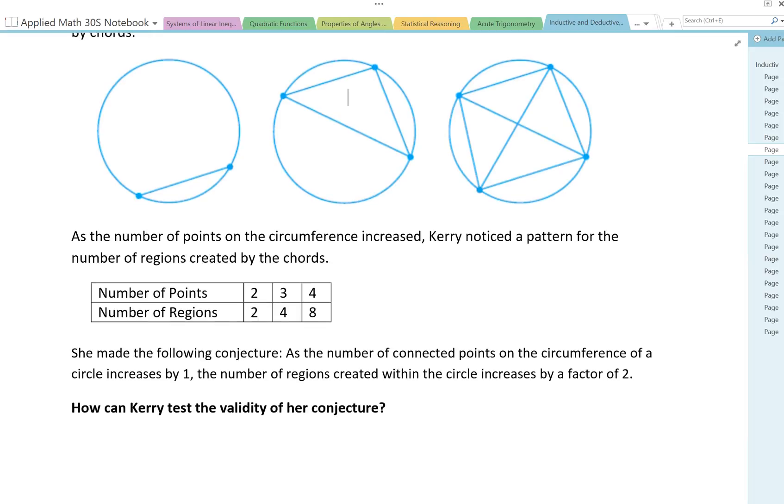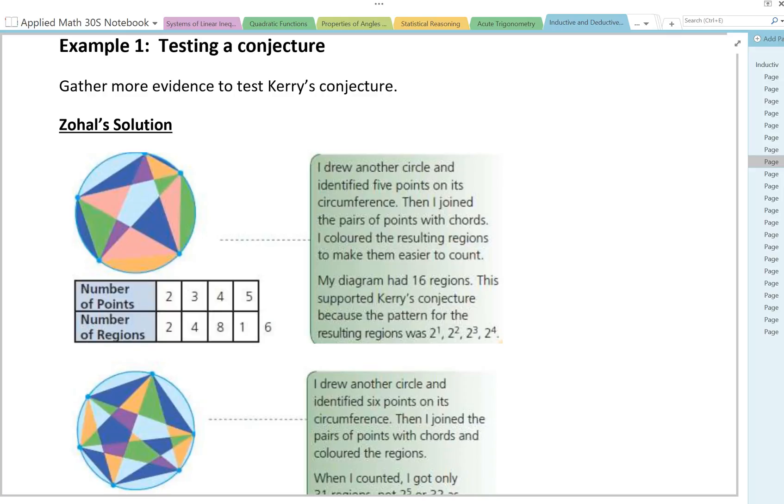4 points created 8 regions and so on. She made the following conjecture. As the number of connected points on the circumference of a circle increased by 1, the number of regions created within the circle increases by a factor of 2. So here's the question. How can Carrie test the validity of her conjecture? So is this a true statement? Is the conjecture true or is it invalid? Is it false?